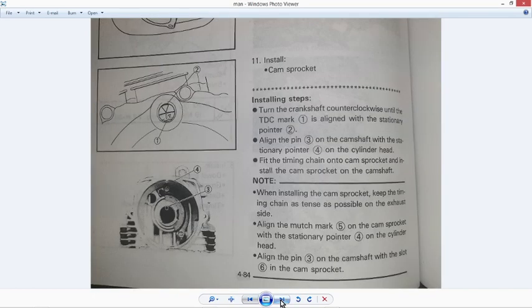The service manual for the cam sprocket install says turn the crankshaft counterclockwise until the TDC mark one is aligned with the stationary pointer number two. And as you can see...